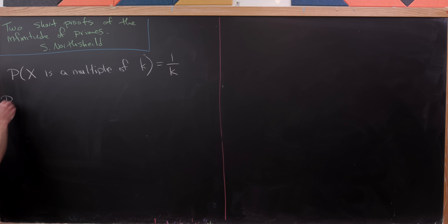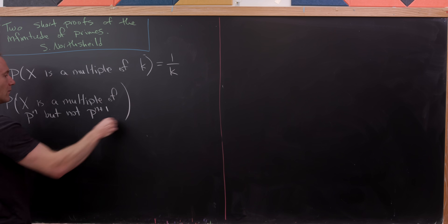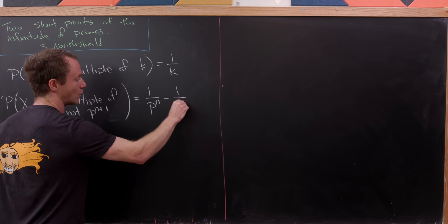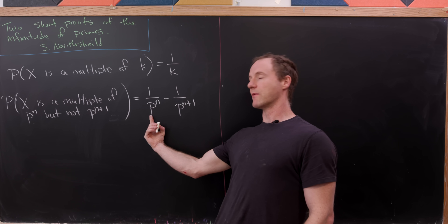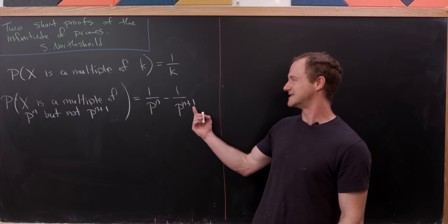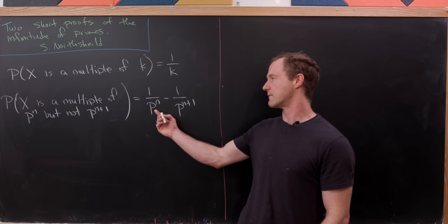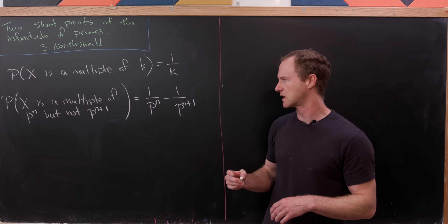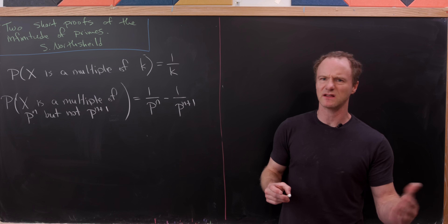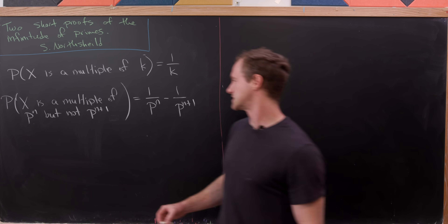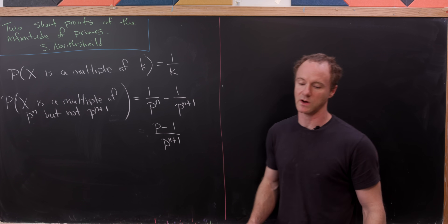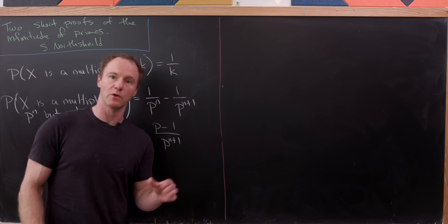Now consider the probability that x is a multiple of p^n but not p^(n+1). That equals 1/p^n minus 1/p^(n+1), because being a multiple of p^(n+1) implies being a multiple of p^n, so we simply subtract. Simplifying, this gives (p − 1) / p^(n+1).